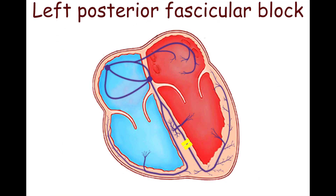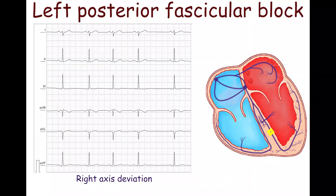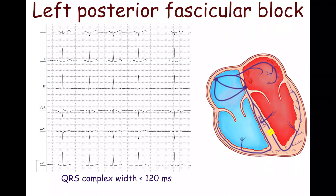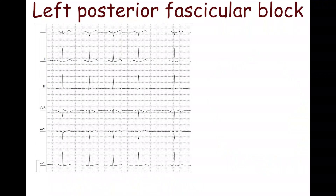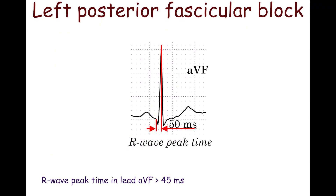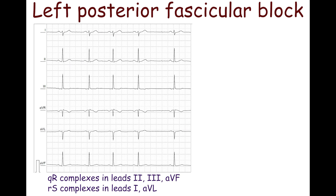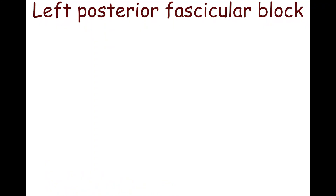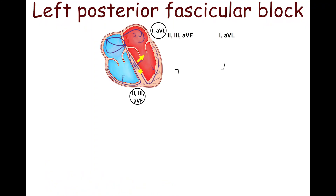The left posterior fascicular block, also called left posterior hemiblock, causes right axis deviation of more than plus 90 degrees. It is much less common than left anterior fascicular block. The QRS complex width does not exceed 120 ms. There is a prolonged R-wave peak time in lead AVF of more than 45 ms. QR complexes in leads II, III, and AVF, and RS complexes in leads I and AVL are seen. As the posterior fascicle is blocked, the electrical impulse spreads via the septal and anterior fascicles. The vector is directed upward and to the left, producing small R waves in the lateral leads I and AVL, and small Q waves in the inferior leads II, III, and AVF.